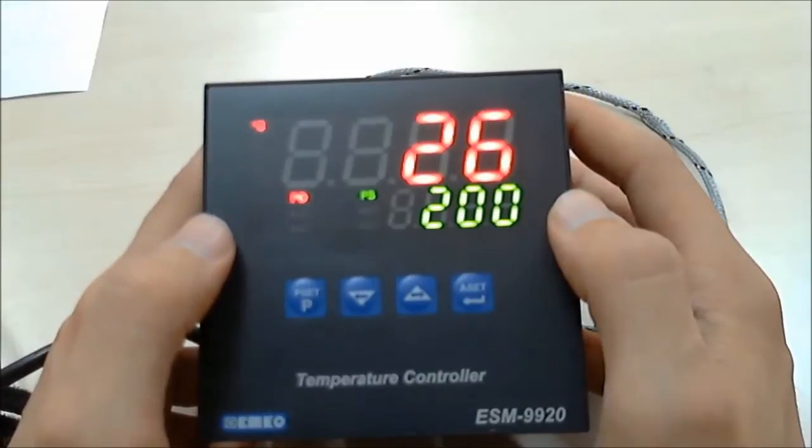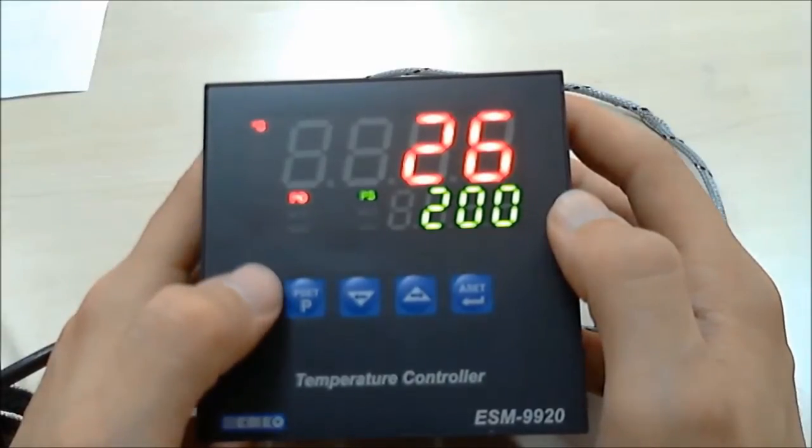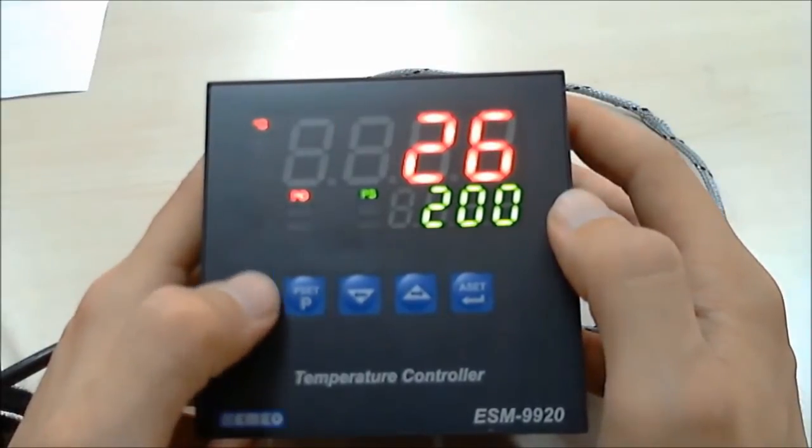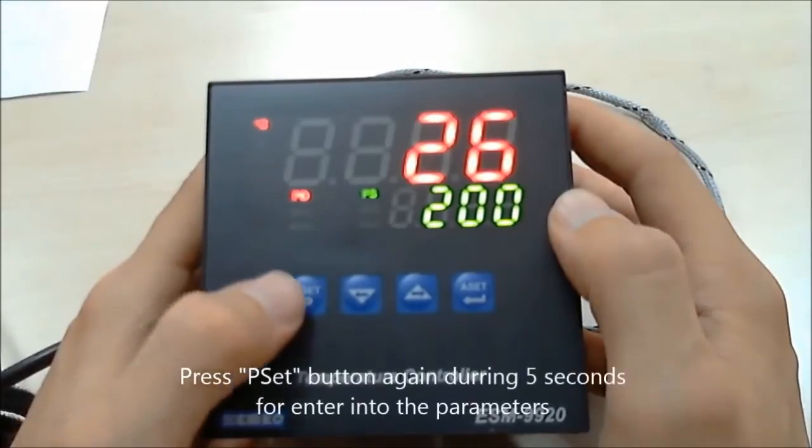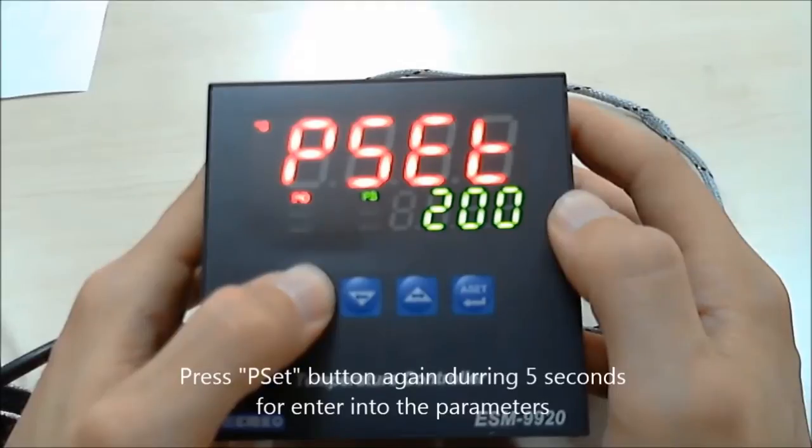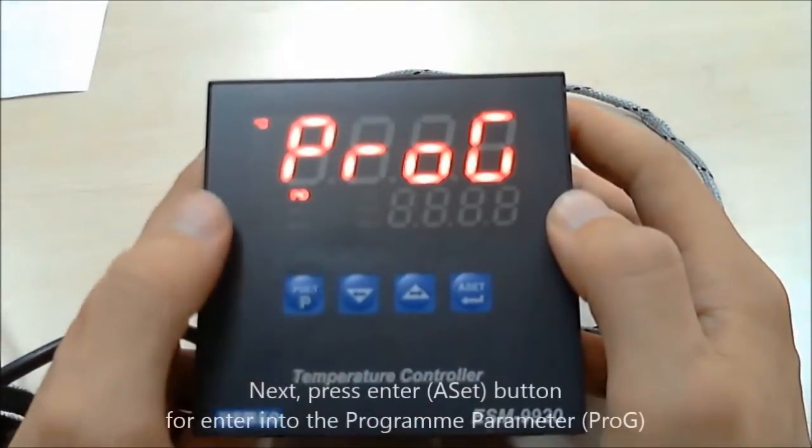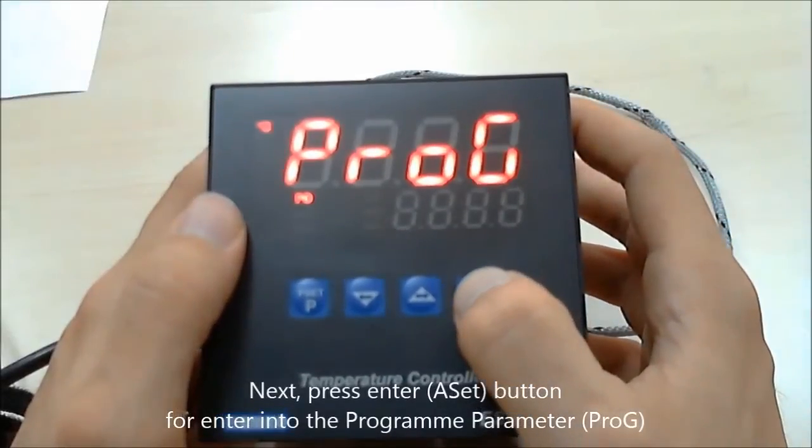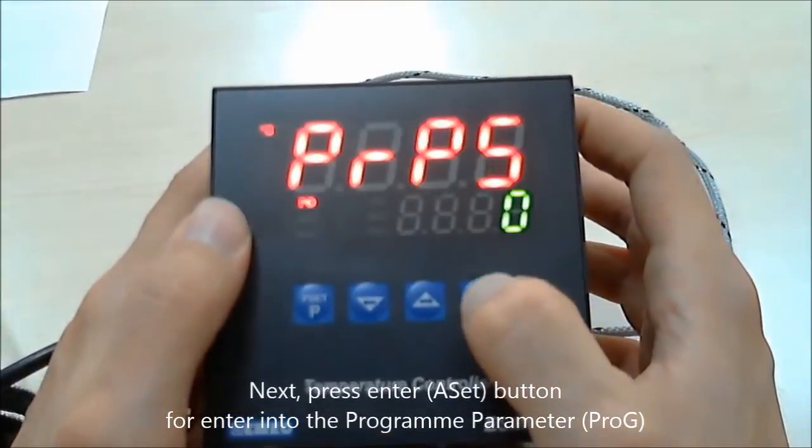And then if you want to enter the program parameters again, press program set button again during 5 seconds. And when we want to enter the program, press enter button.